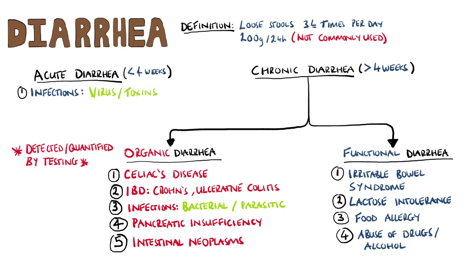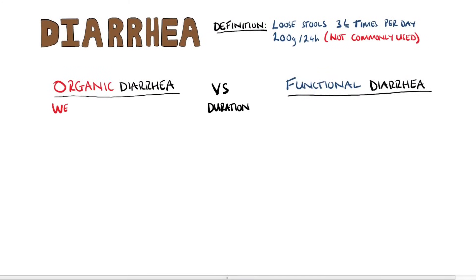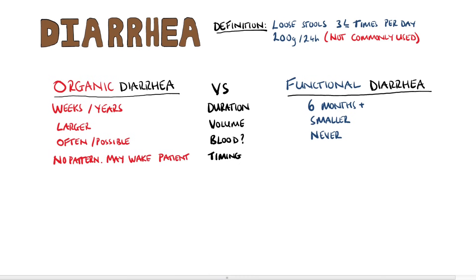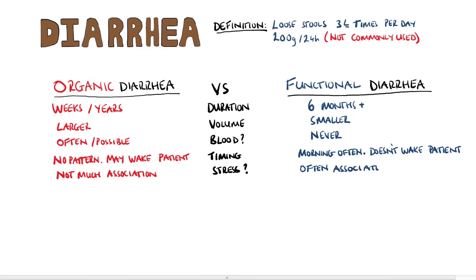How then can we begin to narrow down the causes when we encounter a patient with diarrhea? Let's first tackle how to distinguish functional from organic diarrhea. The duration of organic ranges between weeks and years, while functional is over 6 months. The volume of organic diarrhea is usually larger than in functional. Organic diarrhea often has blood present, while functional will never have blood. Organic doesn't have any specific timing pattern but may wake the patient up at night, while functional is usually in the morning and will not wake the patient up. Organic diarrhea doesn't have much association to stress, but functional diarrhea often coincides with stress.